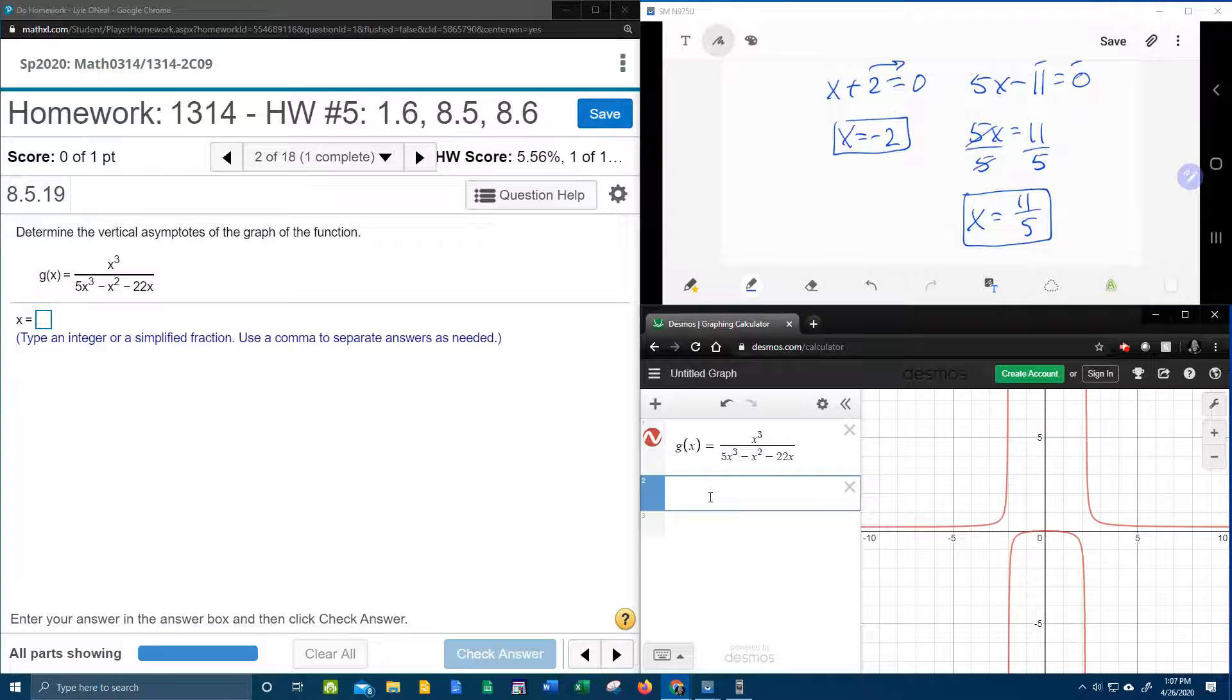and here it looks like there's going to be 2 vertical asymptotes. So I'm going to use Desmos to check and see if I'm right. So the first asymptote I think is correct, x equals negative 2.